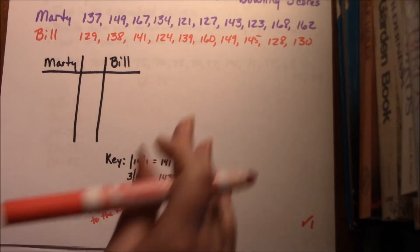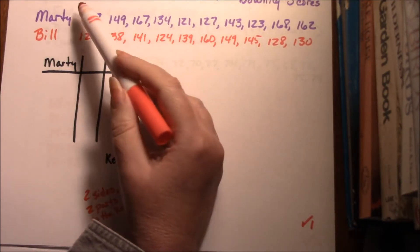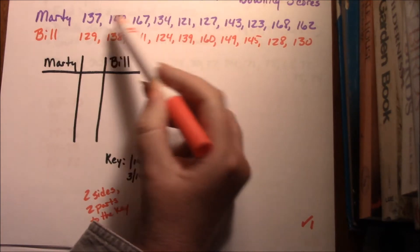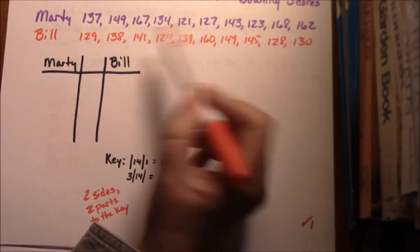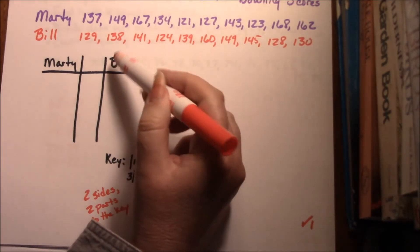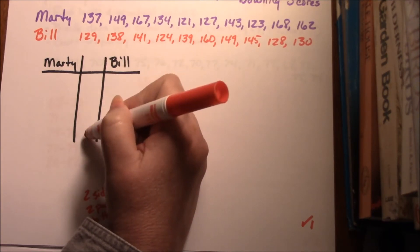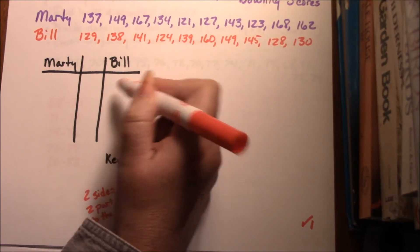Of course we have to add our key, and this is how you do a stem and leaf plot. Because this is algebra and you get everything taken to the next level, we're going to do a back-to-back stem and leaf plot where we take the bowling scores of two different people and put them on the same stem and leaf plot.